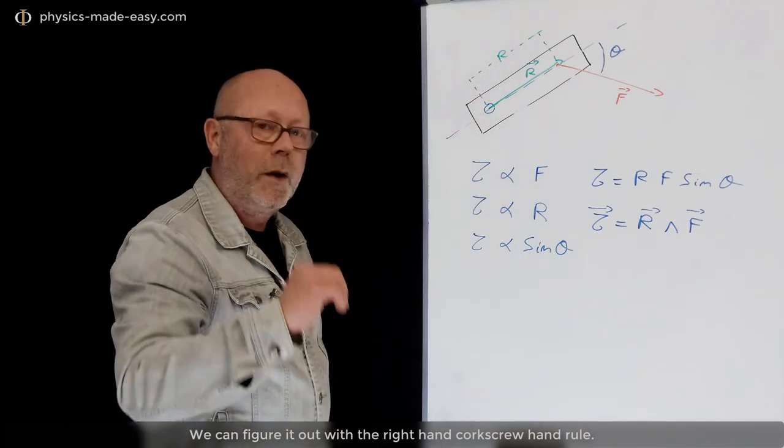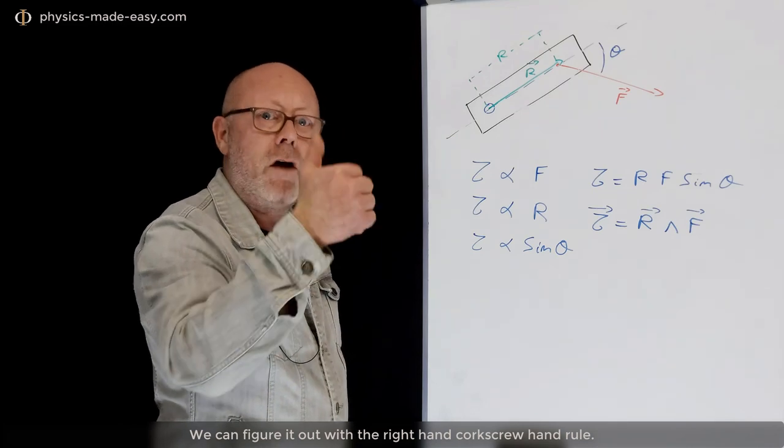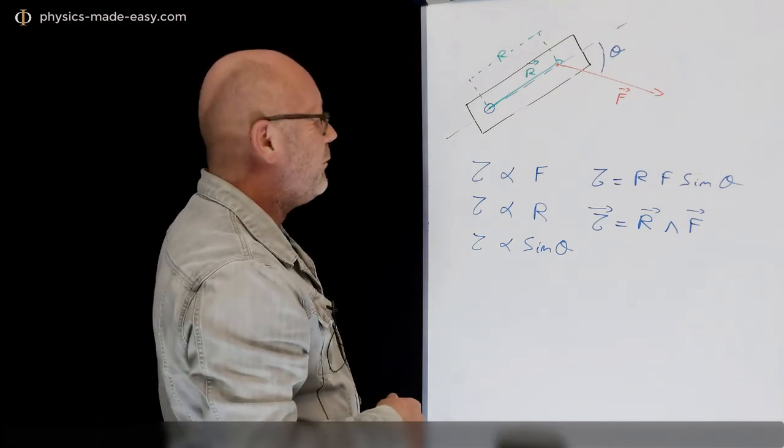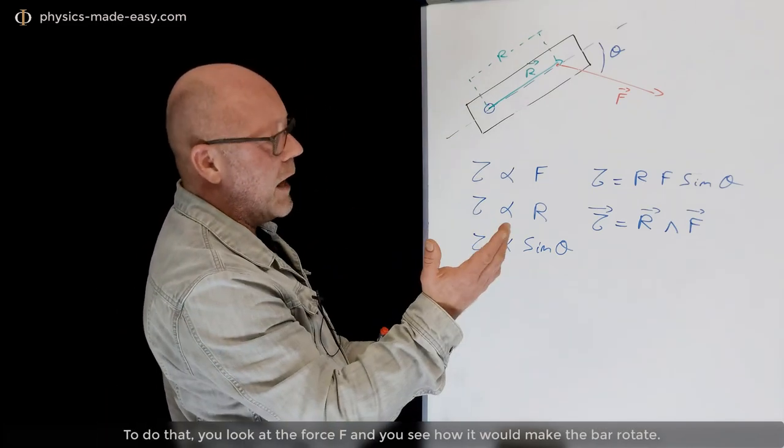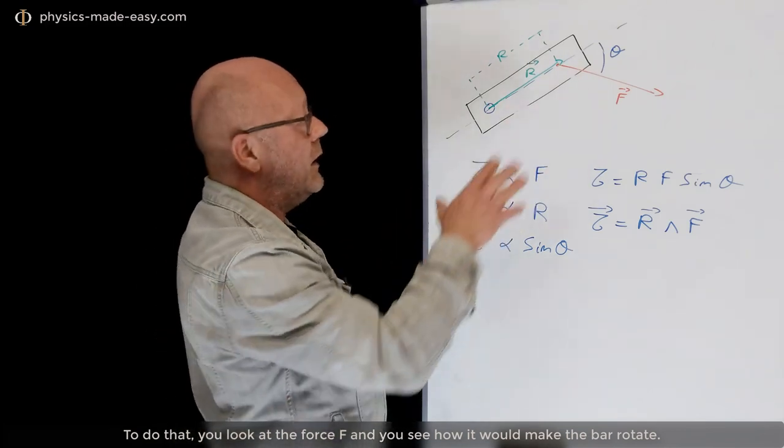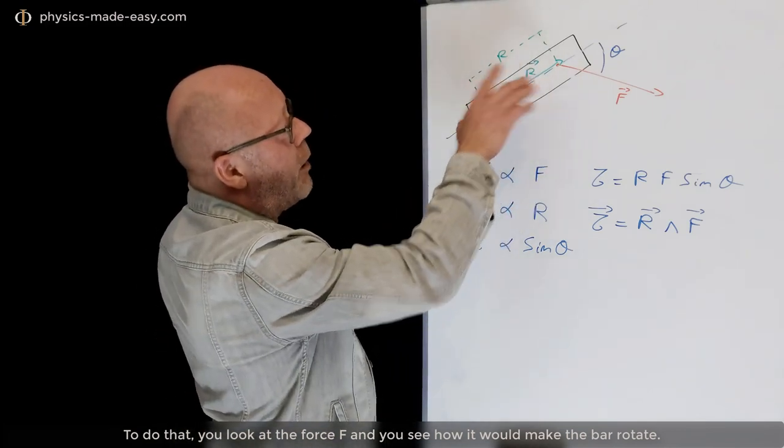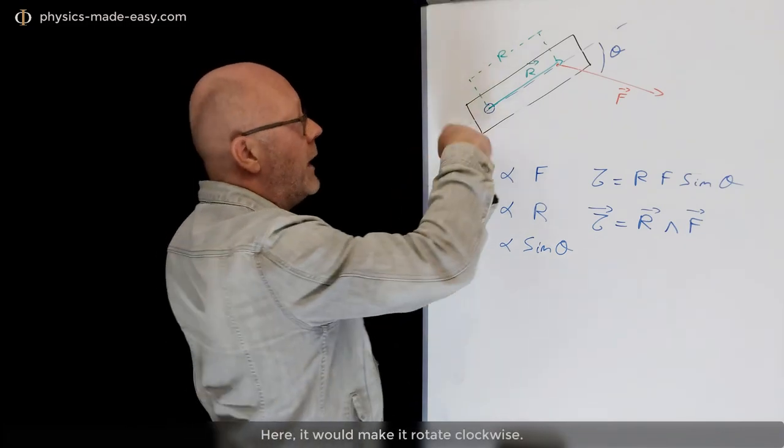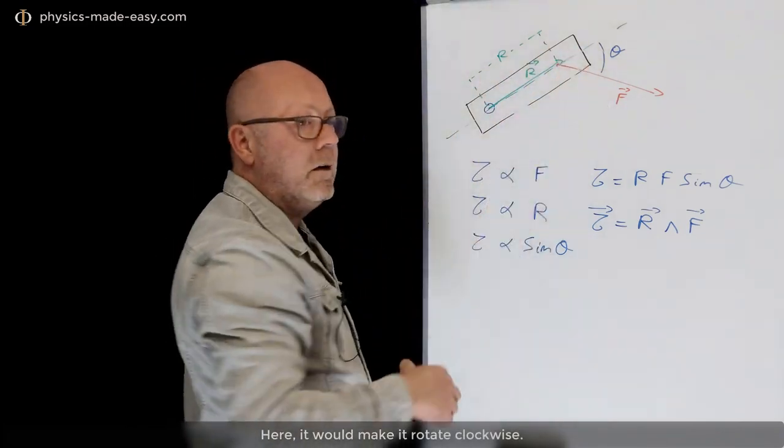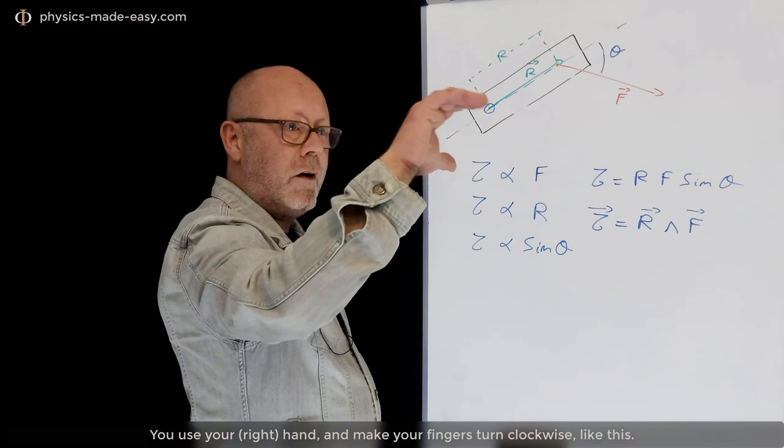We can figure it out with the right-hand-corkscrew rule. So, to do that, you look at the force F and you see how would it make the bar rotate? It would make it rotate clockwise, right?